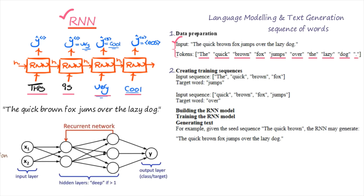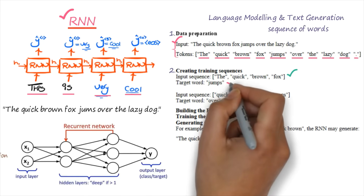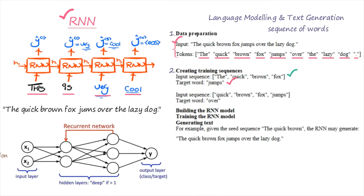What is the second step? The second step is you have to create a training sequence. Since RNN is a neural network model, we have to create training sequences. In this step, we will divide the data into training sequences, where each sequence consists of a fixed number of input words and target words. The input sequence must be selected from the tokens. For example, I have selected 'the', 'quick', 'brown', and 'fox' as the input sequence.